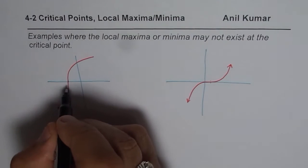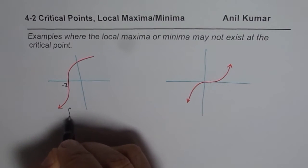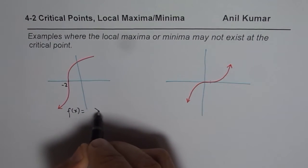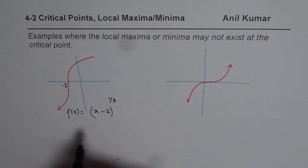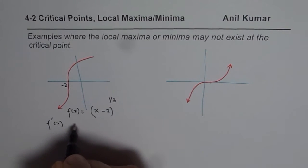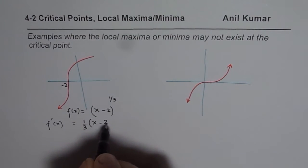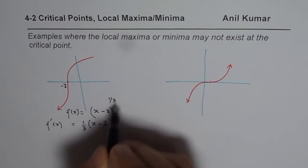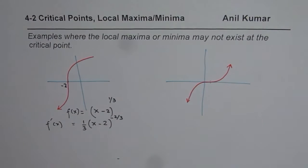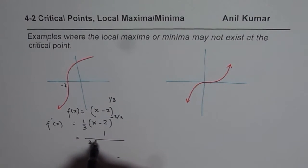For example, let us take this point as x = 2. I could write a function f(x) = (x - 2)^(1/3). If you analyze this, what is the derivative? The derivative of this function is (1/3)(x - 2)^(1/3 - 1), which simplifies to (1/3)(x - 2)^(-2/3), or equivalently 1 over 3(x - 2)^(2/3).